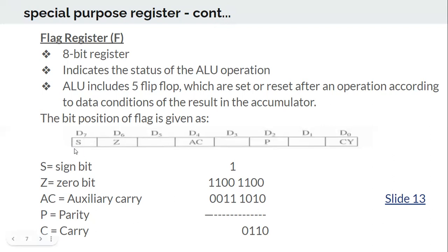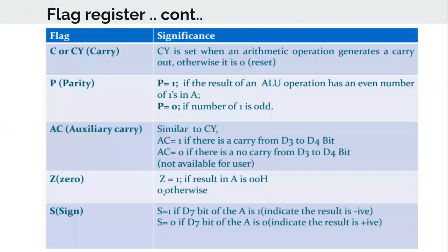The sign bit is either 0 or 1. If the sign bit (D7) is 1, it means the number is negative. If it is 0, the number is positive.